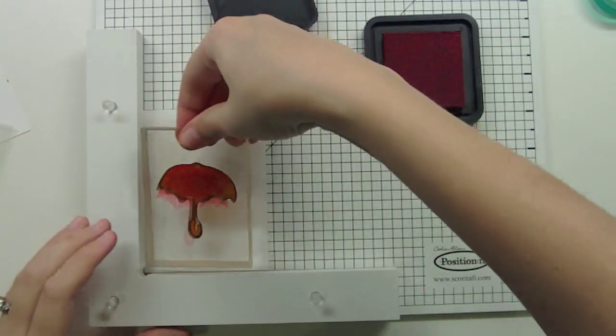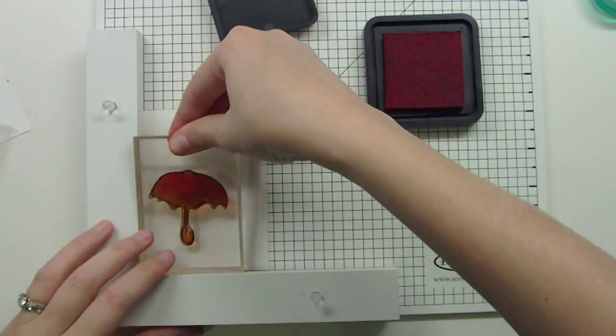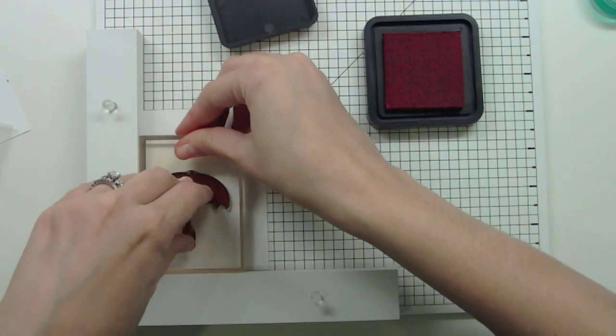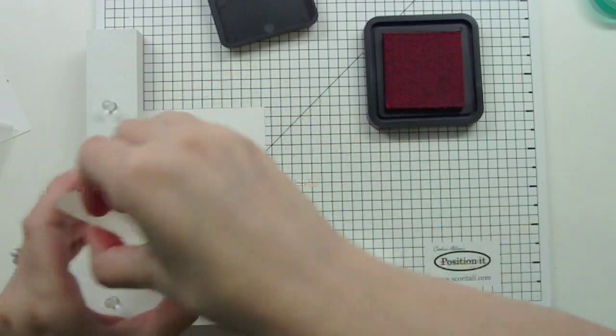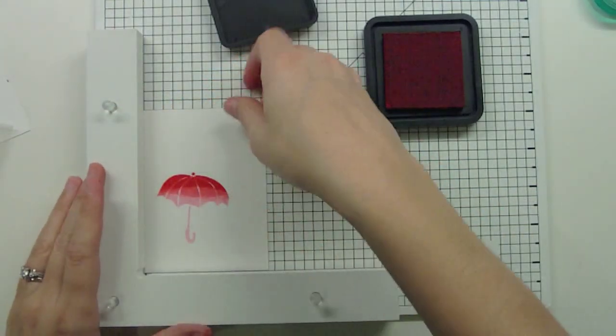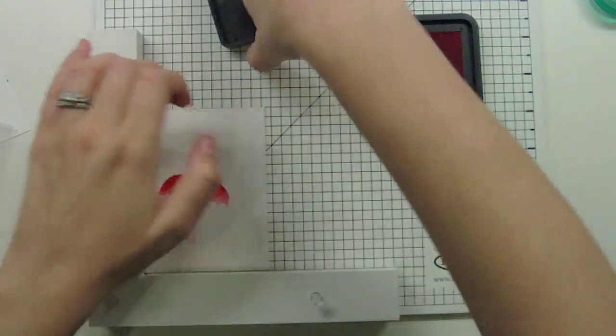So gradiated, not graduated. Sorry about that. So here we go. I'm stamping again, positioning it so it's perfectly aligned. And you're going to see that I have this really cool kind of tie-dyed funky umbrella that would have been really hard to do without the Position It tool.